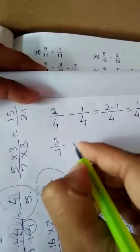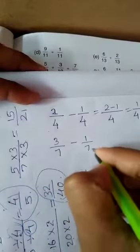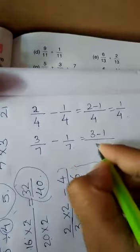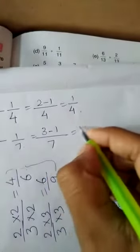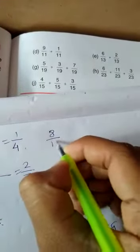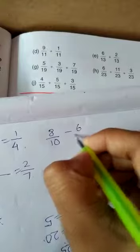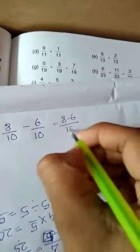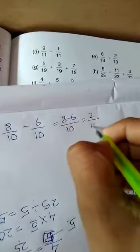3 by 7 minus 1 by 7. The answer is just 3 minus 1 in the numerator, 7 is in the denominator. 2 by 7 is the answer. 8 by 10 minus 6 by 10. 8 minus 6 by 10, that is 2 by 10 is the answer.